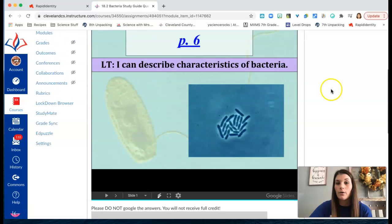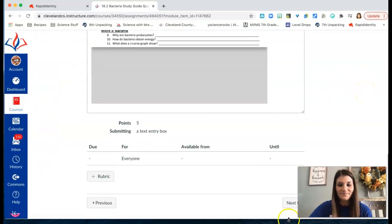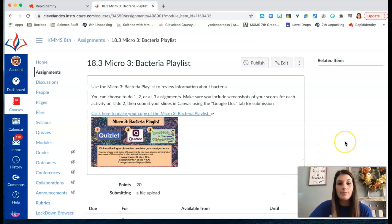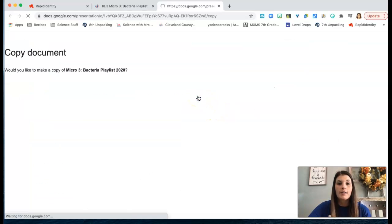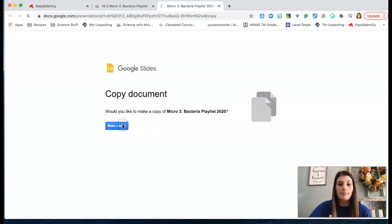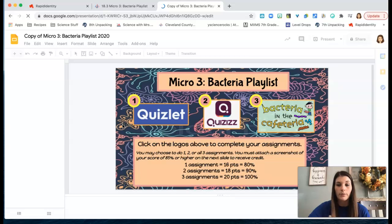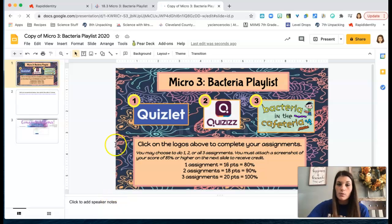The next thing is the micro 3 bacteria playlist. So this is set up in a similar fashion as the molecular biology test review playlist, but you will start by clicking this link and going ahead to make yourself a copy. This will automatically add it to your drive so you don't need to make more than one copy. You can just go to your drive to find it. Once it's made you have three options this week to review some things about bacteria.